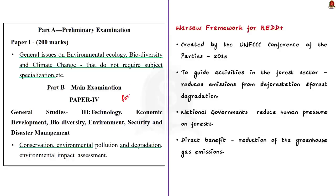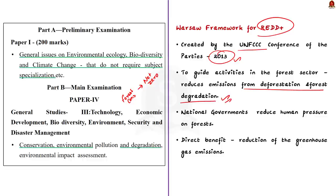For understanding this, let us first have a brief look at the Warsaw Framework for REDD+. REDD+ is a framework created by the UNFCCC Conference of Parties in the year 2013. It mainly focuses on reducing emissions from deforestation and forest degradation. By implementing this framework, national governments can reduce human pressure on forests, and the direct benefit is reduction of greenhouse gas emissions at the national level.